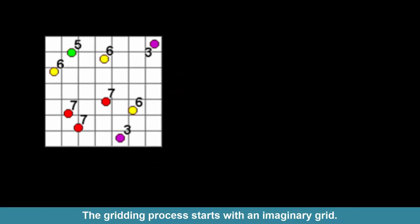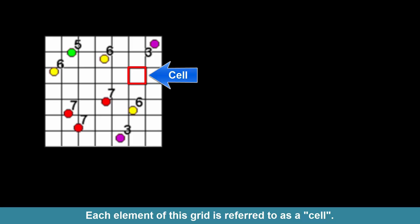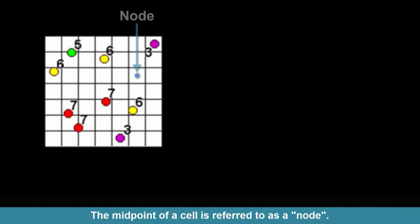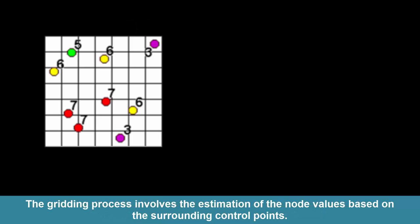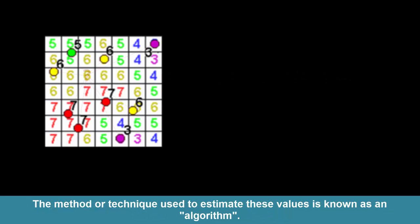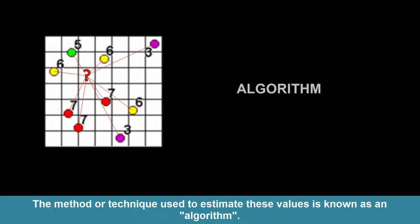The gridding process starts with an imaginary grid. Each element of this grid is referred to as a cell. The midpoint of a cell is referred to as a node. The gridding process involves the estimation of the node values based on the surrounding control points.